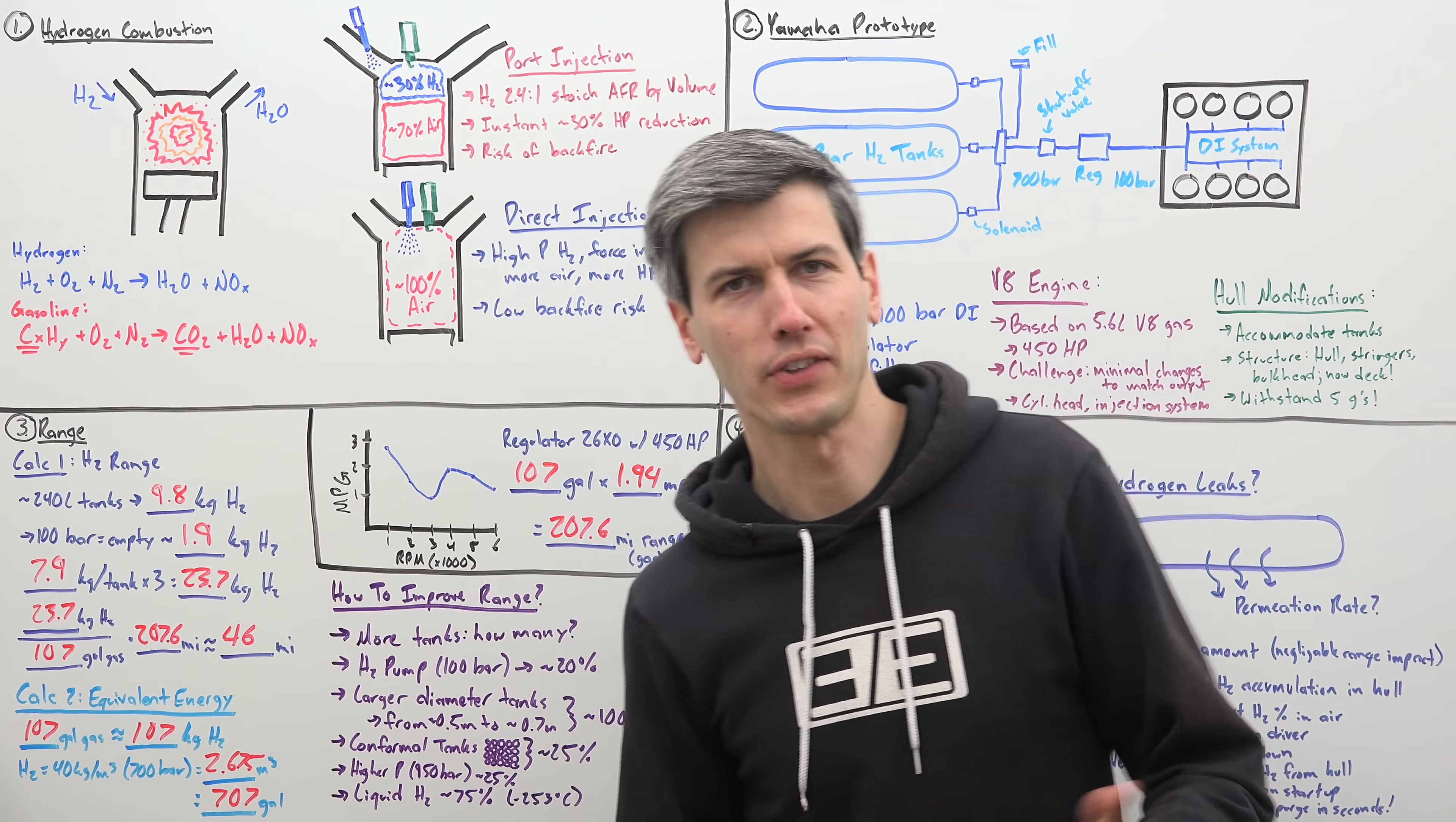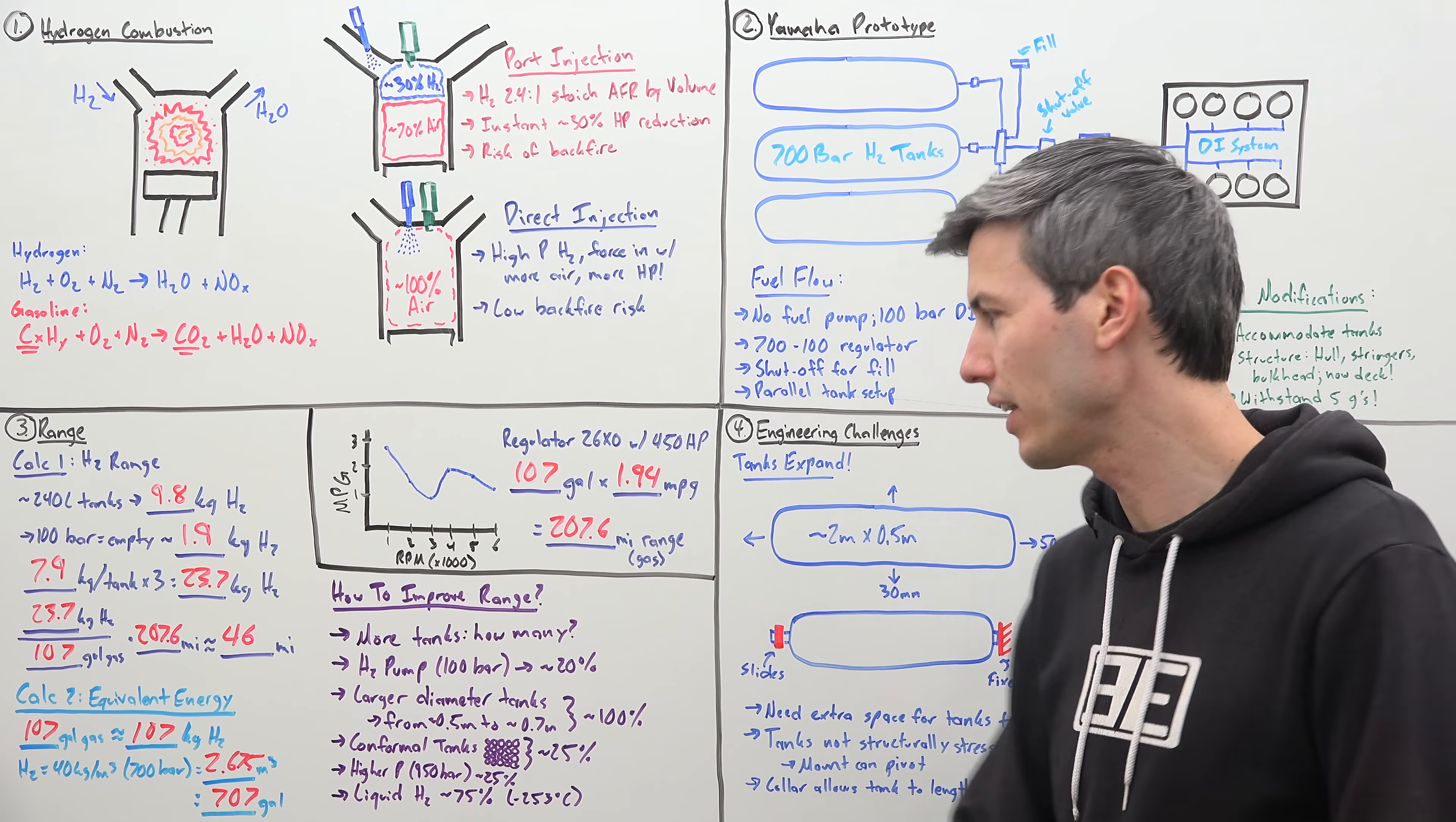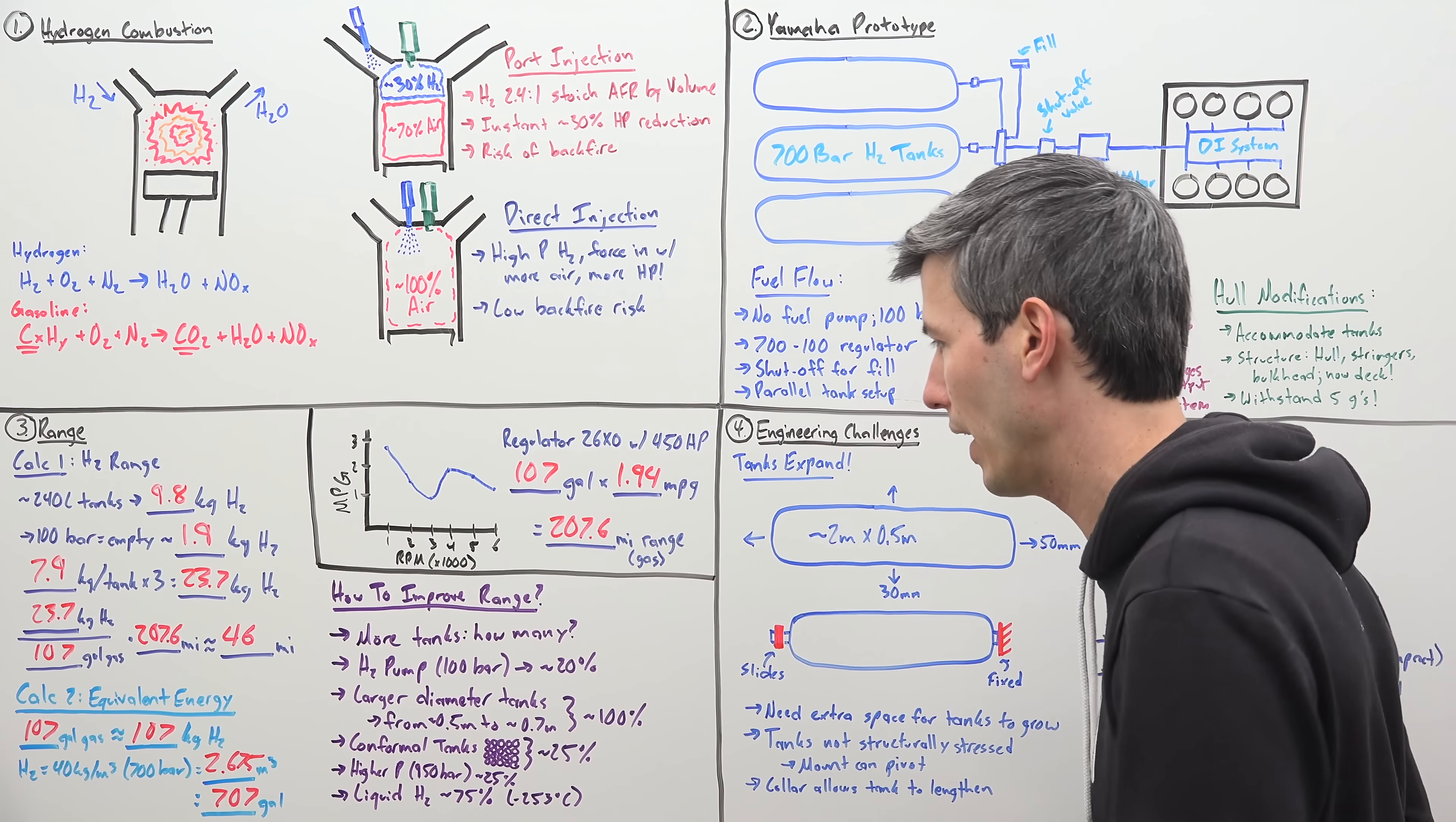Okay, so the obvious answer is you use more tanks, right? Well, the challenge is you need a lot of tanks, over 13 tanks of what we see here on this boat in order to make the equivalent range of the gasoline version. Also, a simple obvious idea, use a hydrogen pump, right? Because you have all that fuel just sitting in these tanks at 100 bar that you can't use because you don't have a fuel pump. So that would give you an additional 20% usable hydrogen.